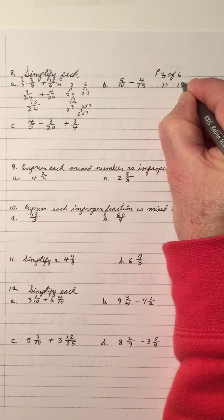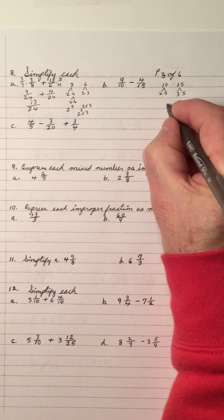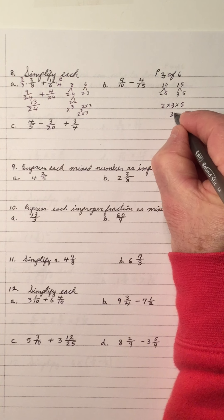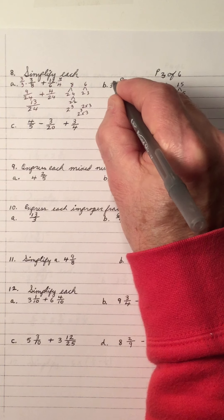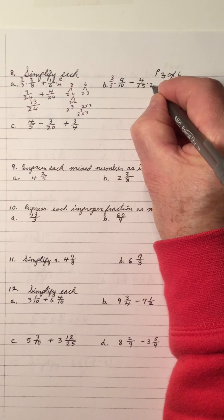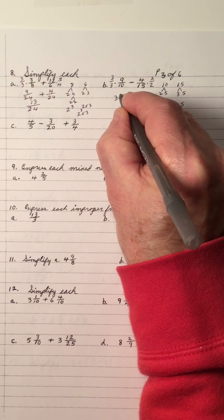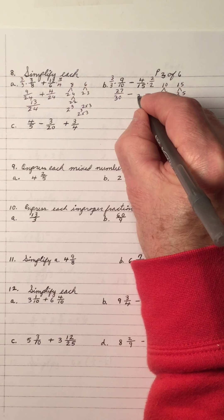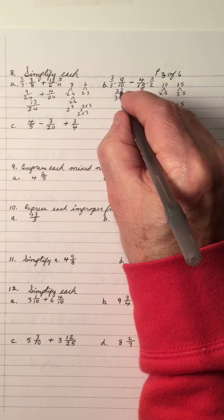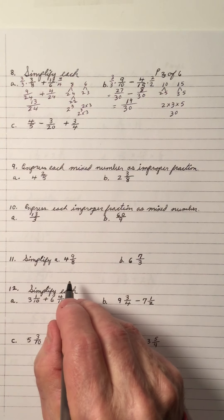For denominators 10 and 15: 10 is 2 times 5, 15 is 3 times 5 — so LCD is 2 times 3 times 5, which is 30. Multiply the 10 by 3 — so 3 over 3. 15 goes into 30 twice — so 2 over 2. That gives 27 over 30 minus 8 over 30. 27 minus 8 is 19 over 30. 19 is prime and can't reduce.